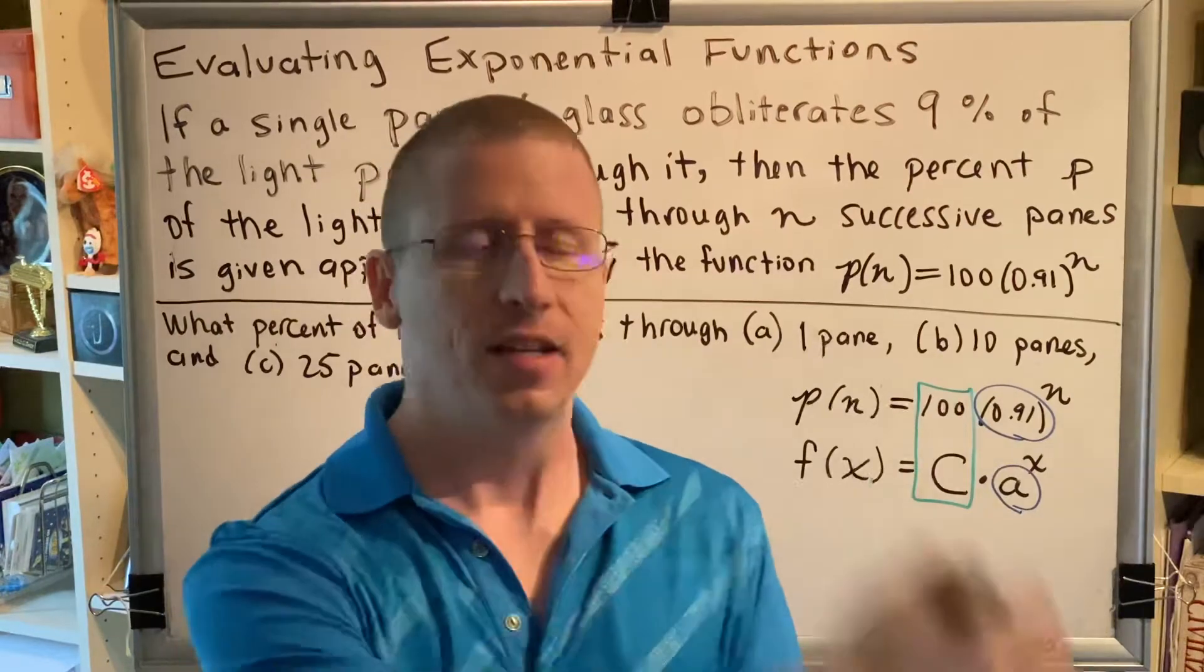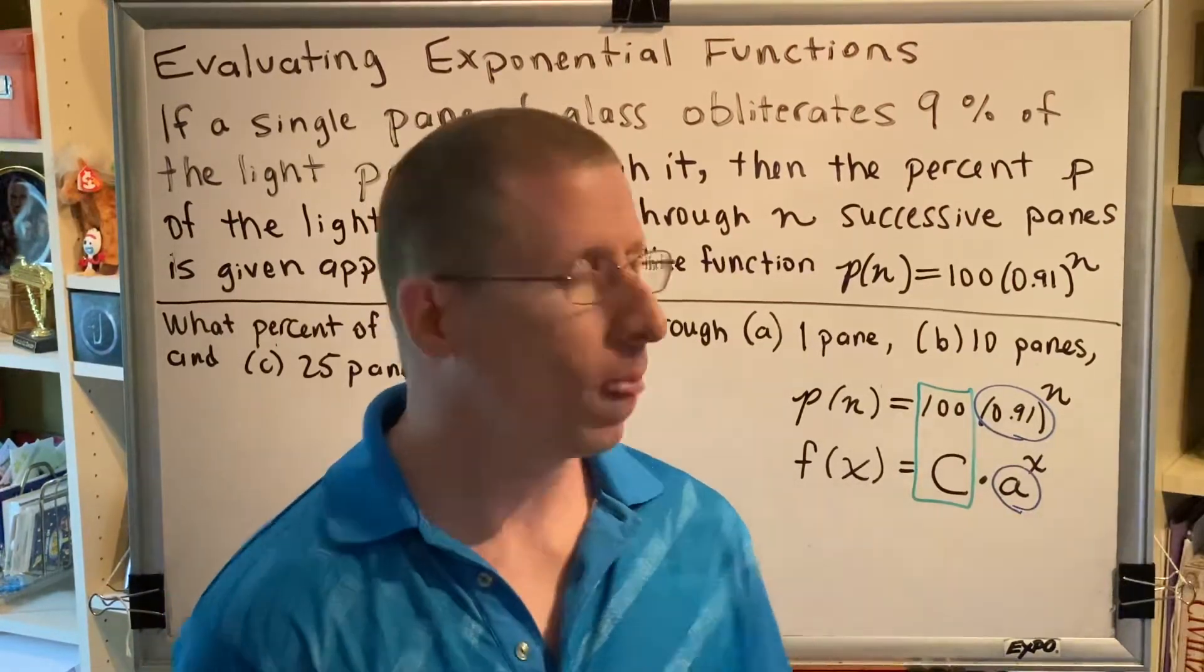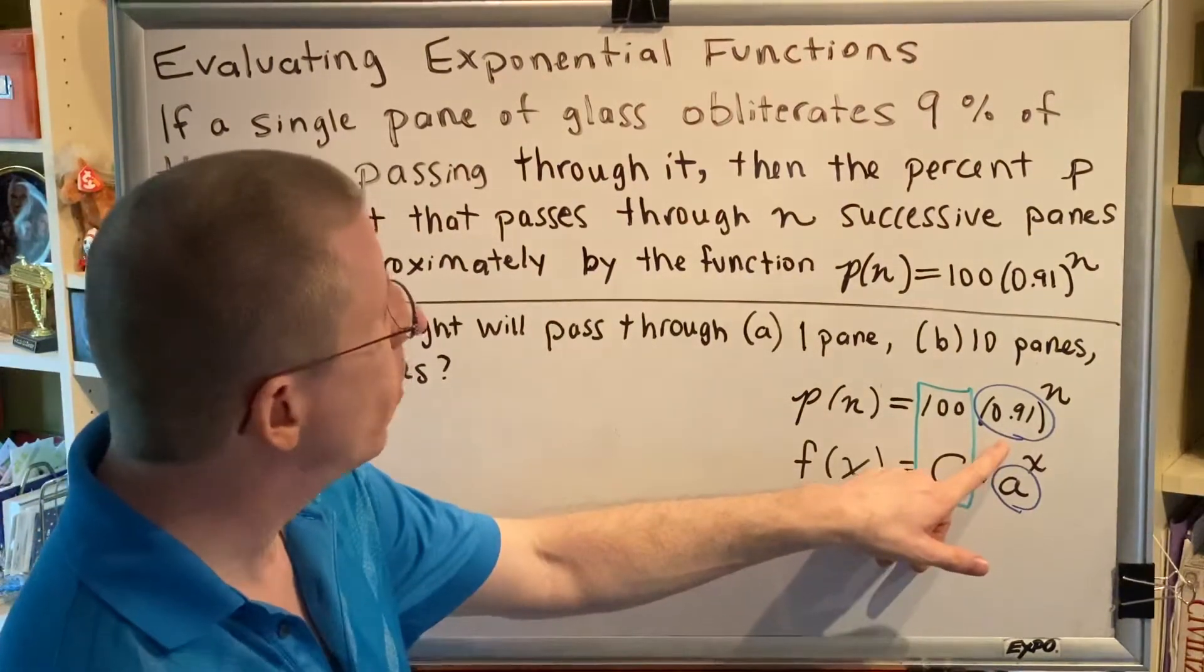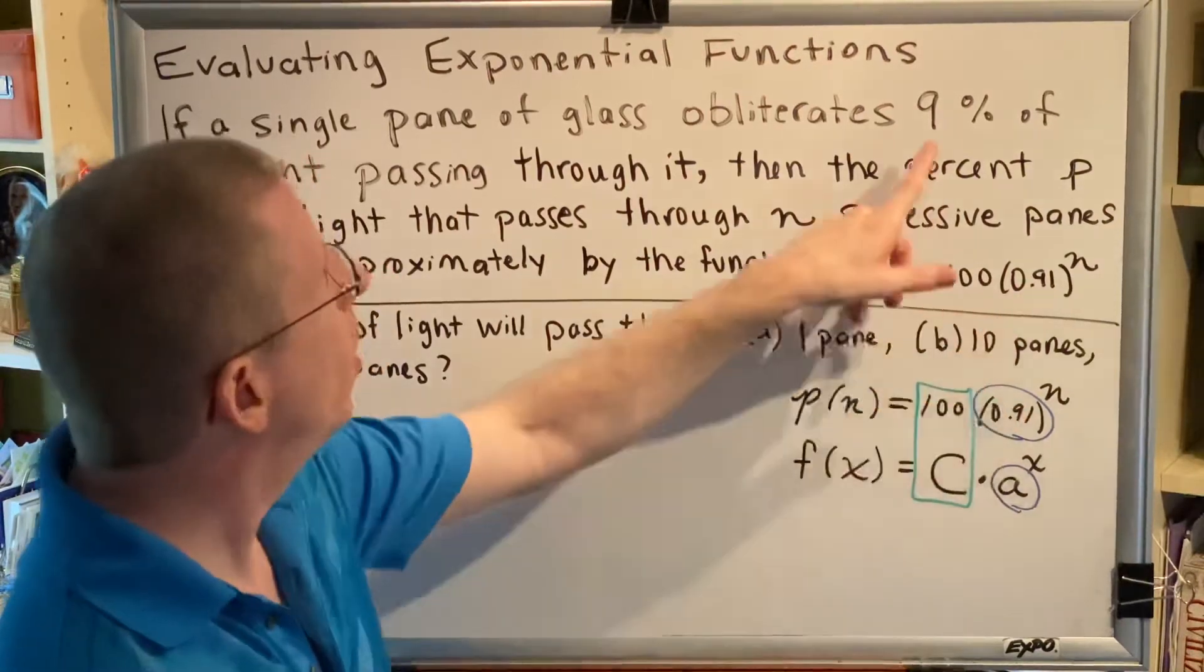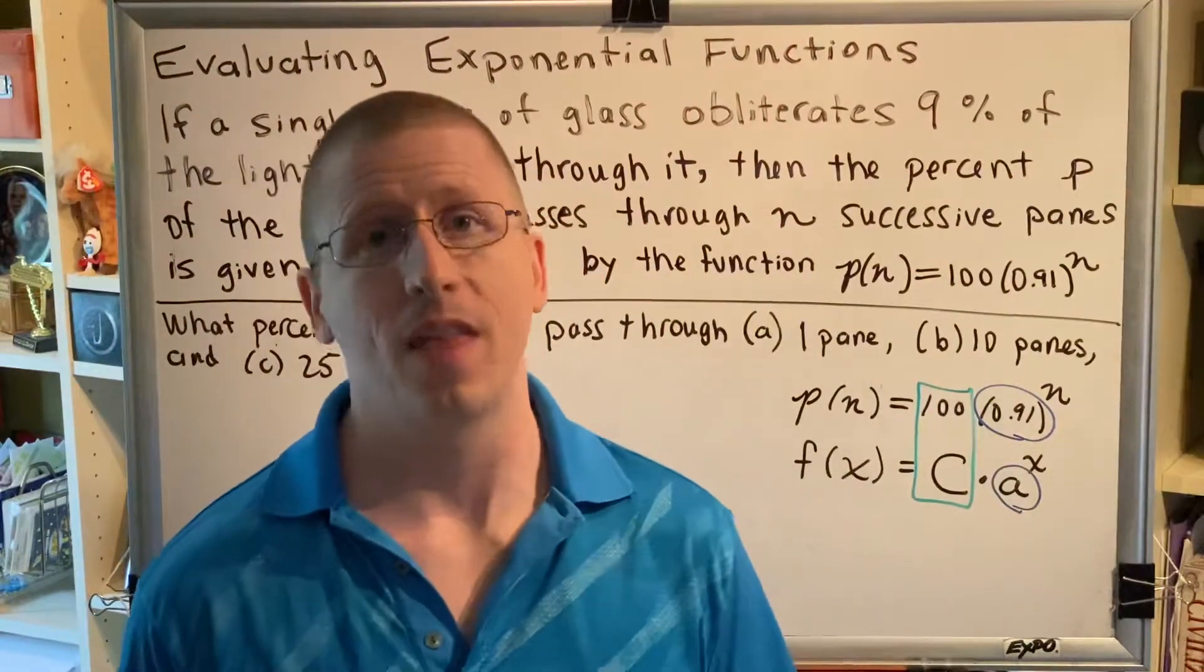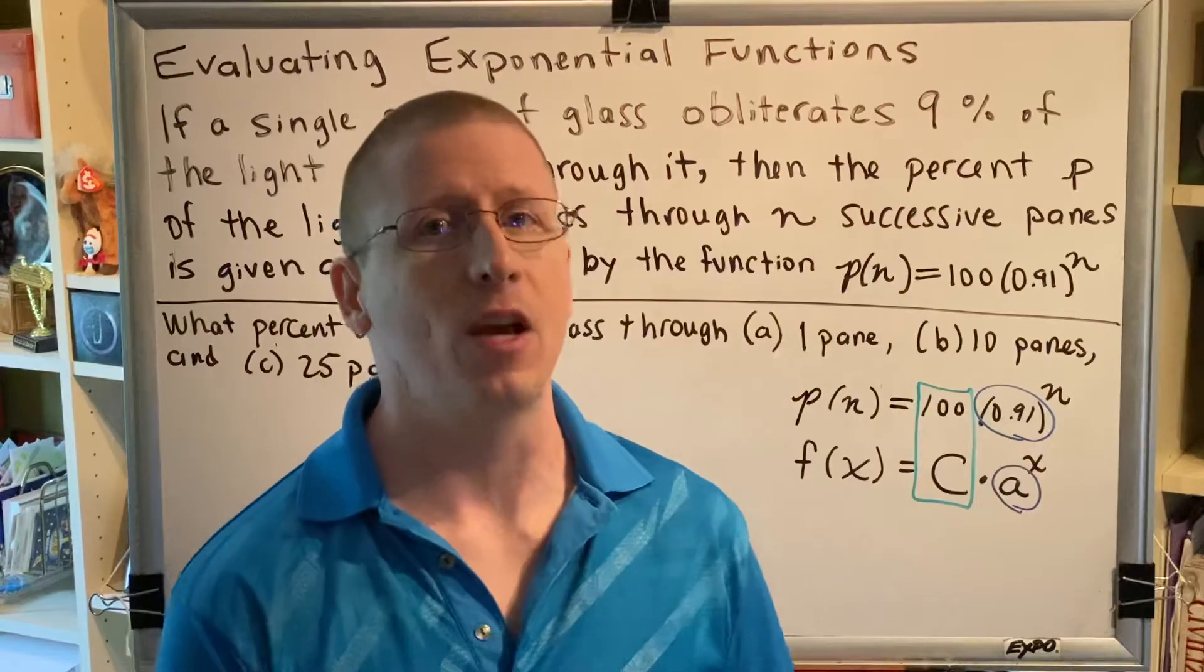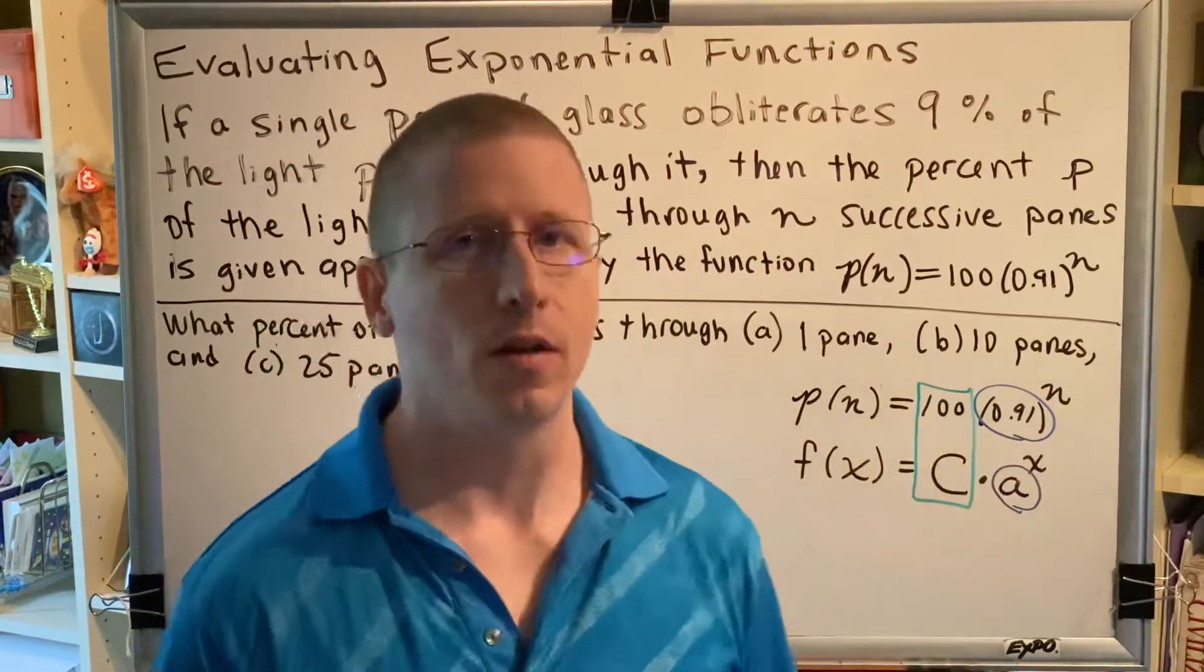Then, once it goes through the first pane of glass, some of the light will be obliterated, which means only some of the light will get through. So that's where this 0.91 comes in. You might think to yourself, where did that number come from? And of course it was given in the problem, but it's also related to this 9 right here. If 9% of the light is obliterated, that means 91% of the light gets through. 100 minus 9 equals 91. And 91% as a decimal is the number 0.91.